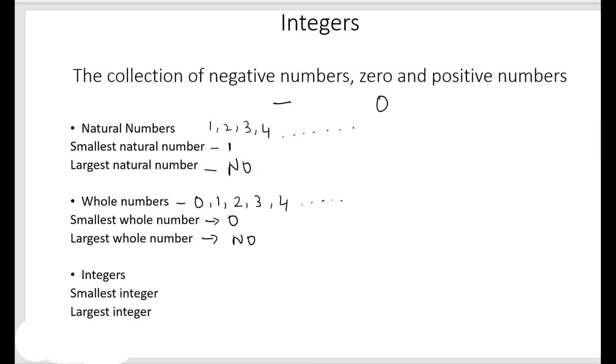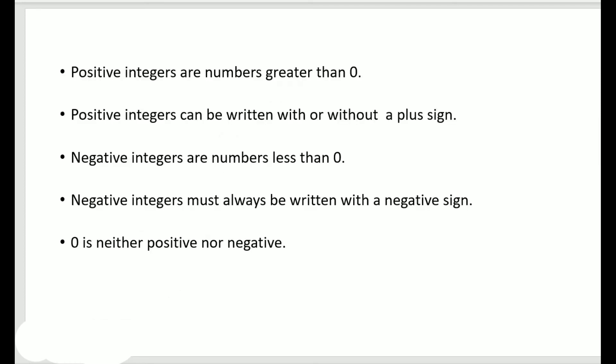Coming to integers: there is no smallest integer, and there is no largest integer. So remember — the smallest natural number is one, no largest natural number; smallest whole number is zero, no largest whole number; and for integers, there is no smallest and no largest integer.